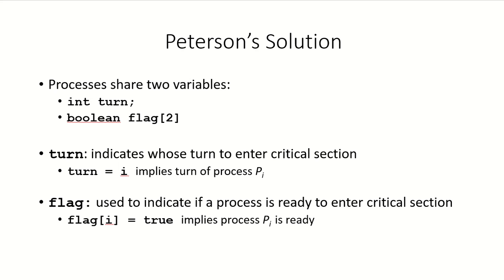Peterson's solution proposes two variables shared between the two processes. One is an integer variable called turn, and the other is a boolean array of size 2. The variable turn indicates whose turn it is to enter the critical section: if turn equals i, process PI will enter; if turn equals j, process PJ will enter. The flag array of type boolean is used to indicate whether a process is ready to enter the critical section.